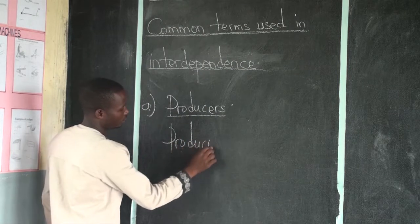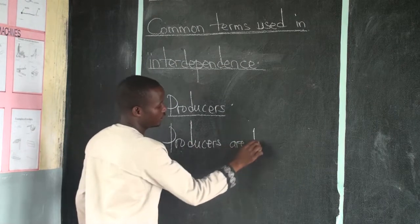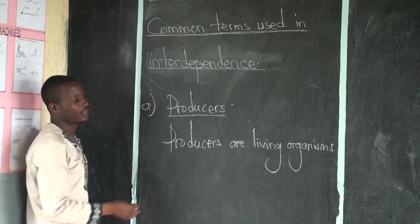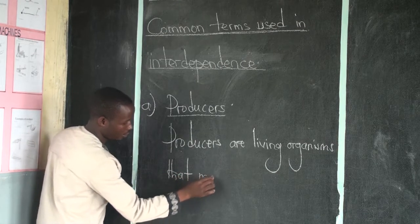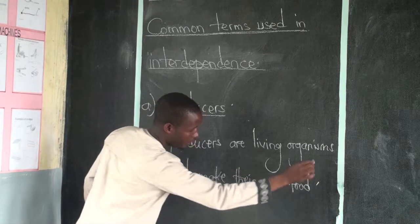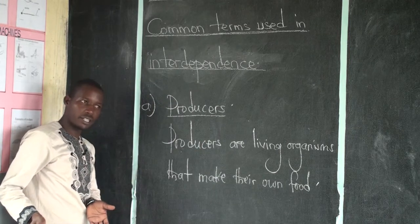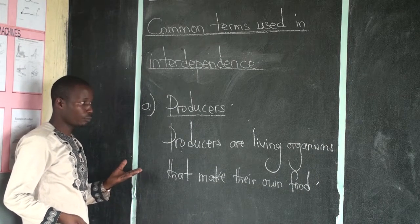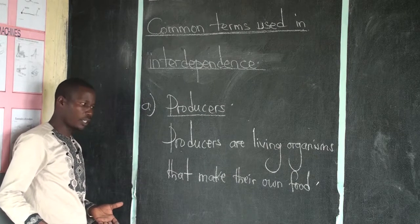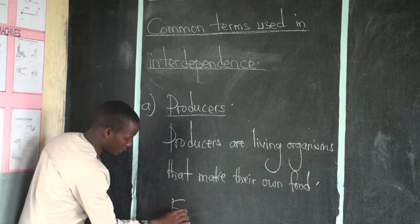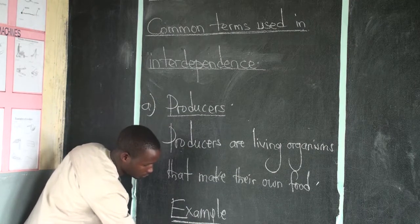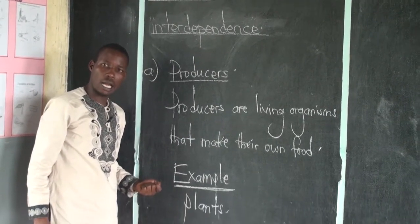Producers are living organisms — living things that make their own food. These ones don't depend on food that is manufactured already; they make their own food. If you asked which living things can make their own food, the best examples are plants. Plants make their own food through the process called photosynthesis.